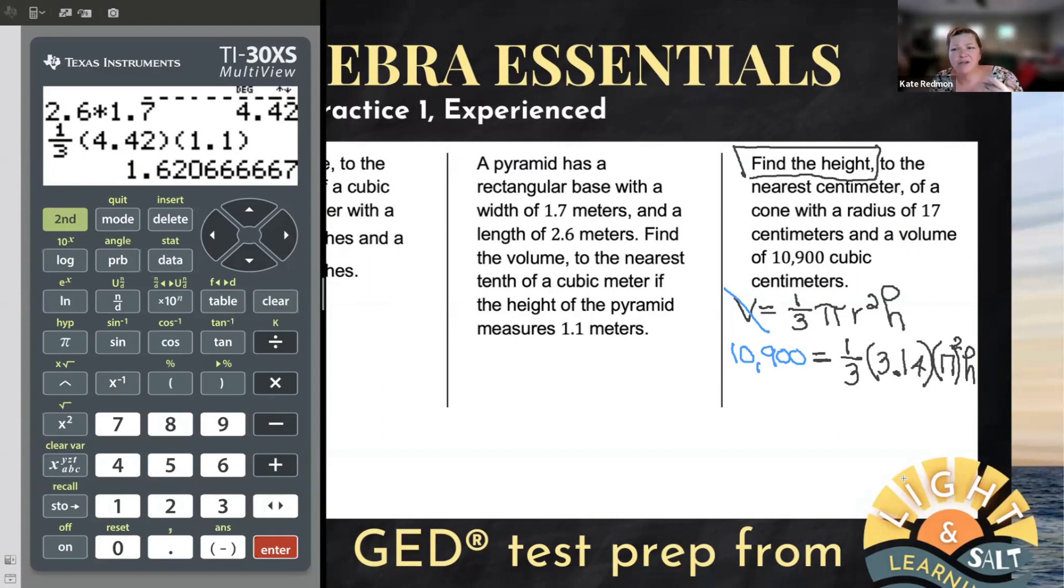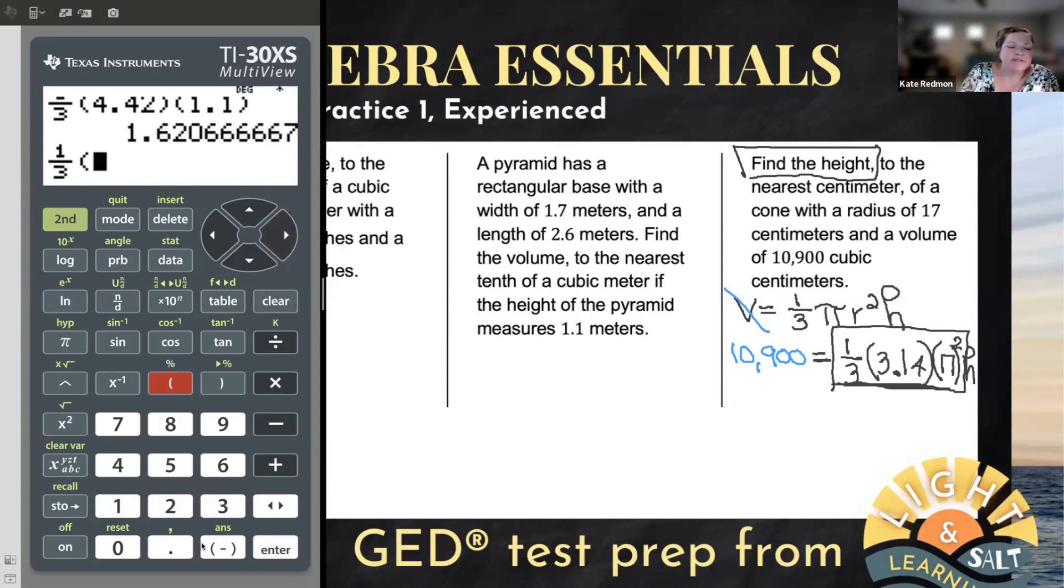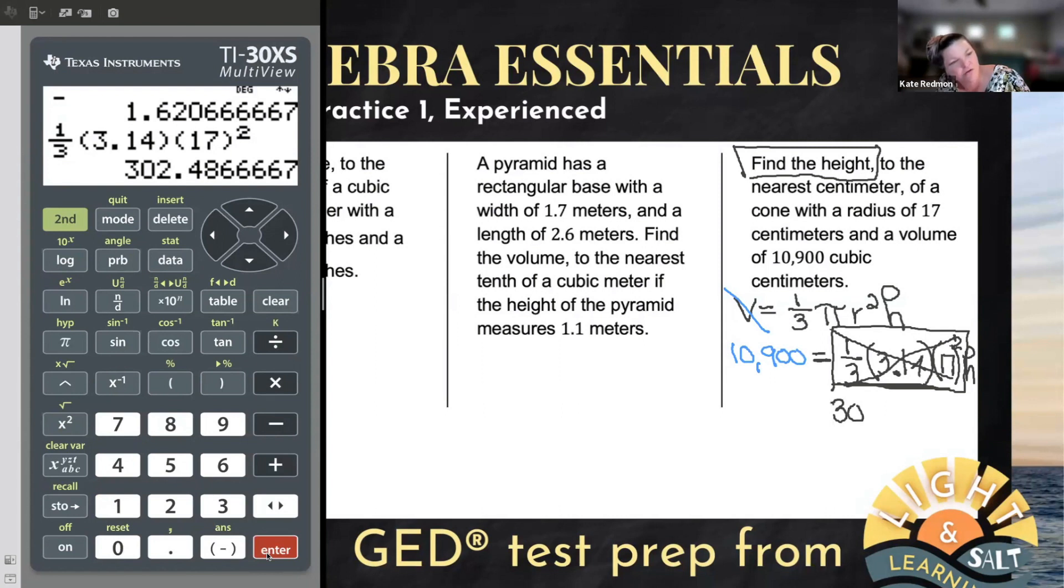This looks ugly, but it's not nearly as bad as it looks because we can simplify this whole portion. This whole big, ugly number is all shoved up against h. It's all multiplying h. Let's just simplify it to figure out what it is. And that'll make it way simpler. I'll type in one-third times 3.14, close parentheses, open them up to type in the 17, close the parentheses before I square. And this whole thing gets a little simpler, 302 point yada yada yada. Now, I'm not going to write down all those digits on my paper. Frankly, I'm too lazy. But I am going to keep them in my calculator, and you do it too. Don't press clear. Let me drop the h. Let me drop the equals and the 10,900.